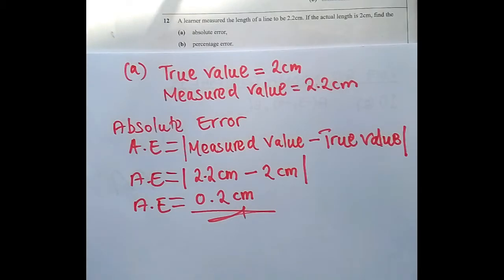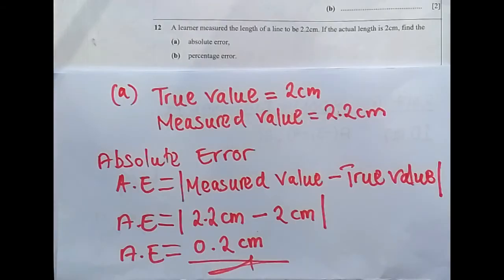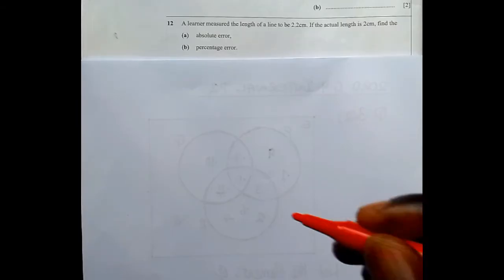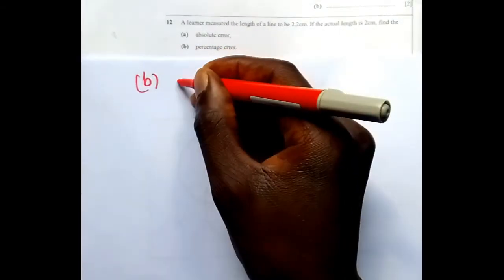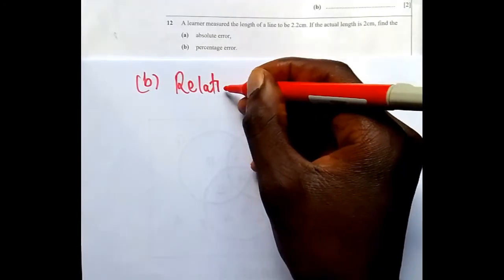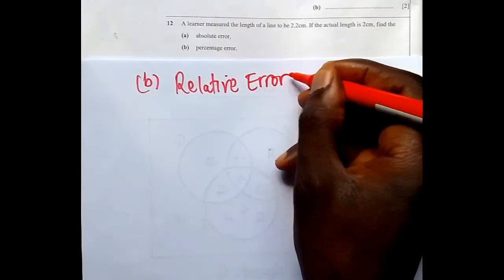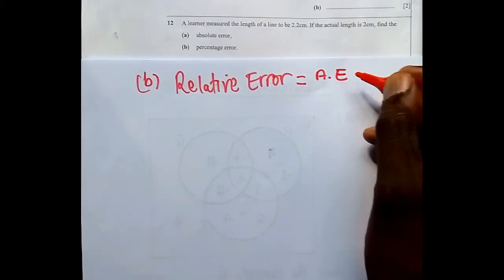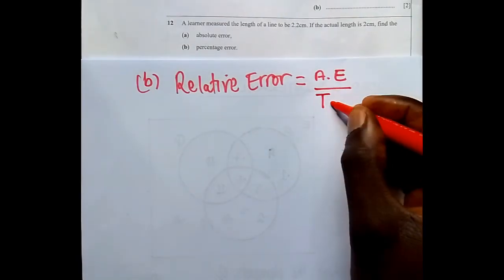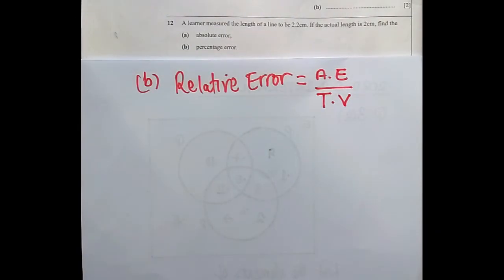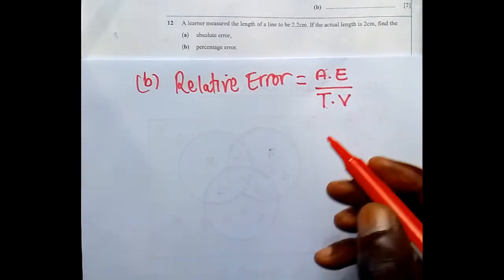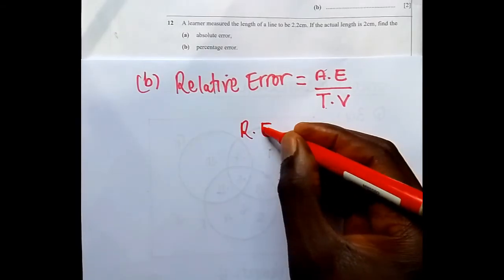We now move to part (b), finding the percentage error. To work out this part, we first calculate the relative error. The relative error is given by the formula: absolute error over true value — that is AE divided by TV. So relative error RE equals absolute error over true value.